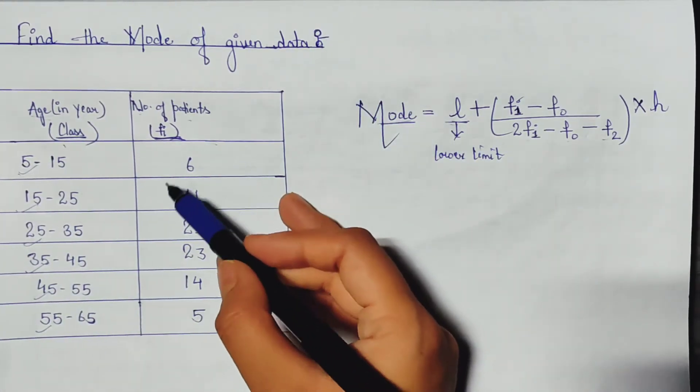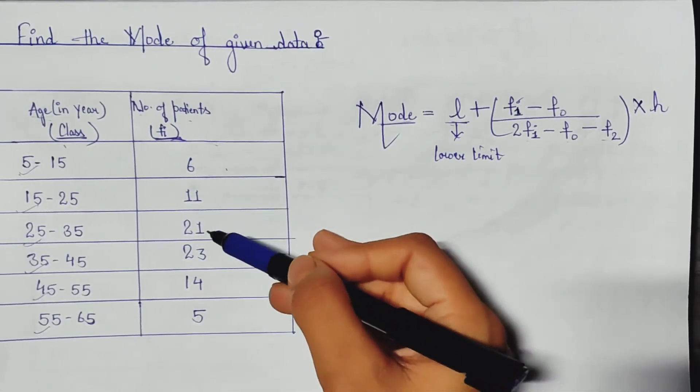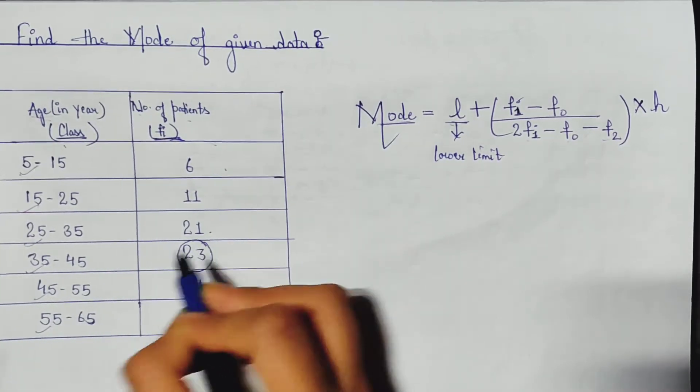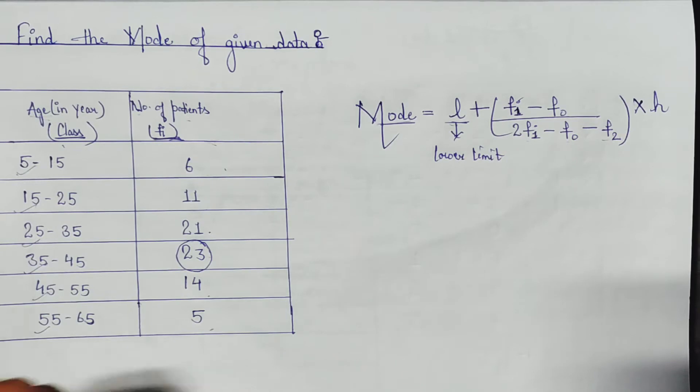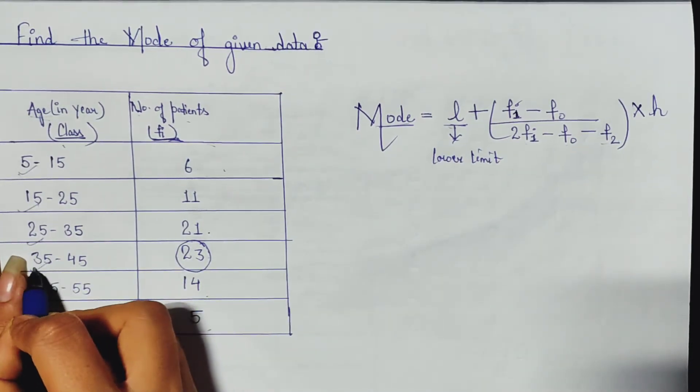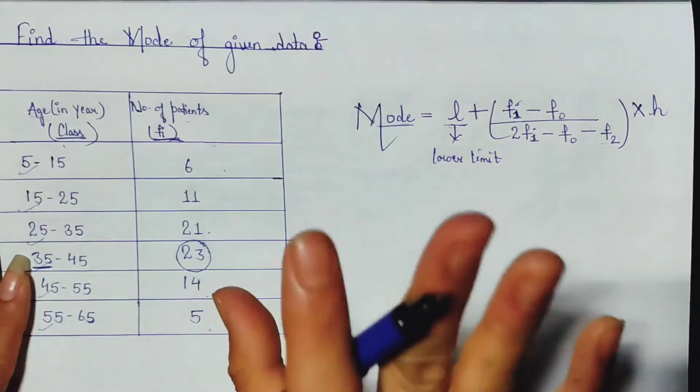First of all, the greatest value in this frequency. Which number is the greatest one? Here we are seeing 23 is the greatest number, so we just need to mark this value. Now here in the same row we need to check the lower limit.